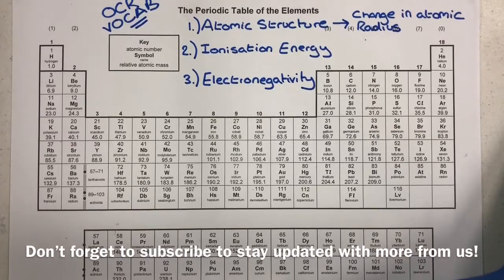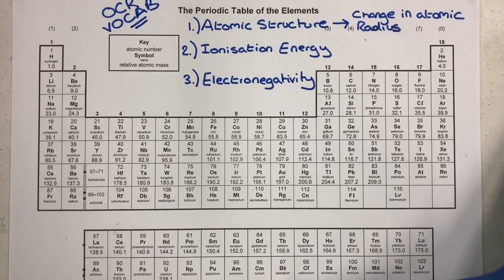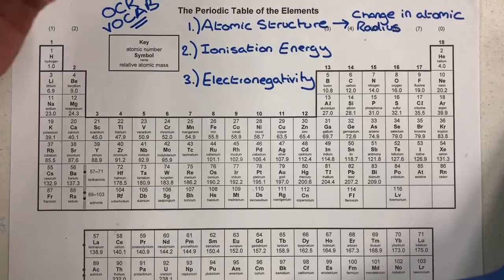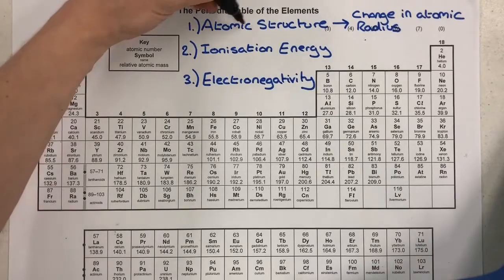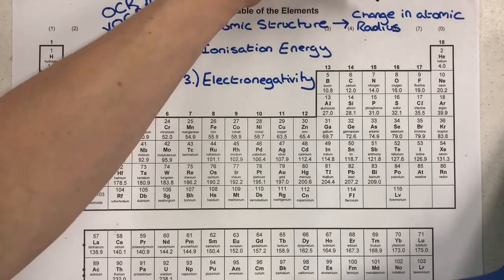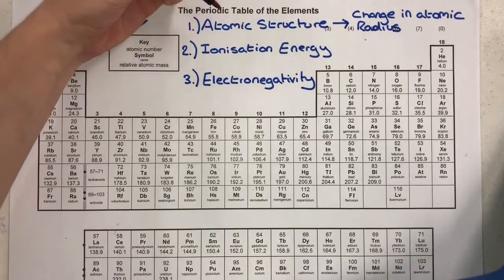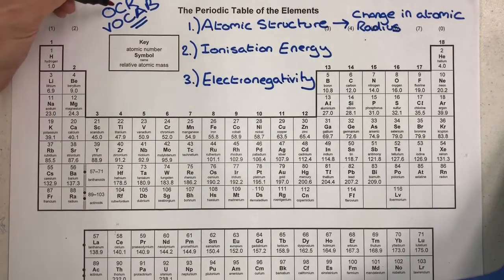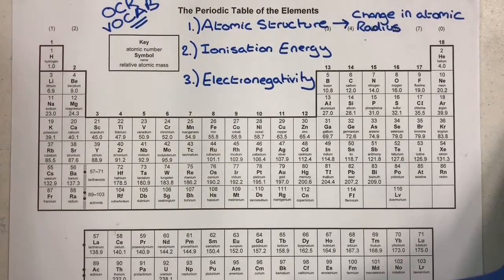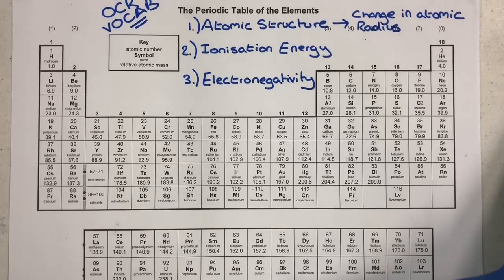Hi everyone and welcome back to ASFC Chemistry where I'm going to take you through some periodicity and we're going to look at general patterns and trends as we move through the periodic table. We're going to look at three things: atomic structure and how that changes atomic radius, the ionization energy trend focusing on some new OCR vocab for when the spec changed in 2015, and we're going to give a brief mention to electronegativity.